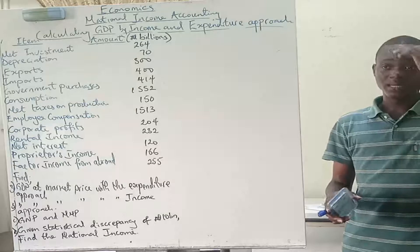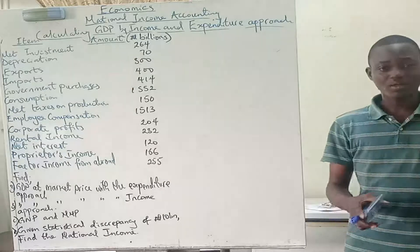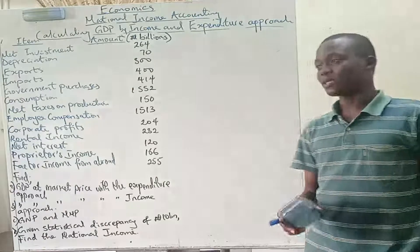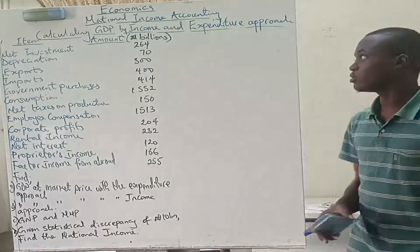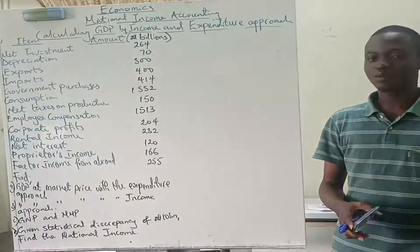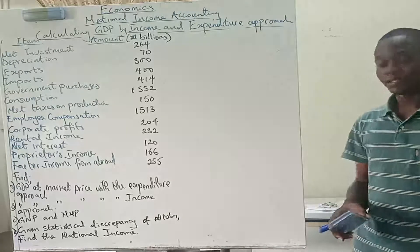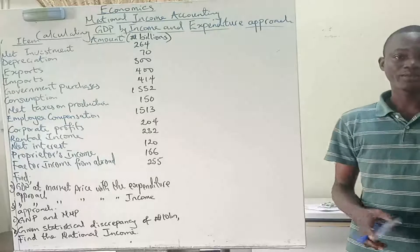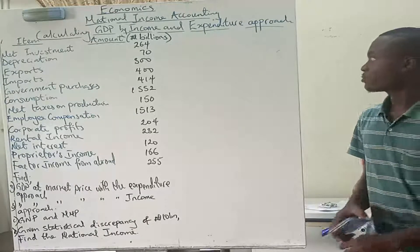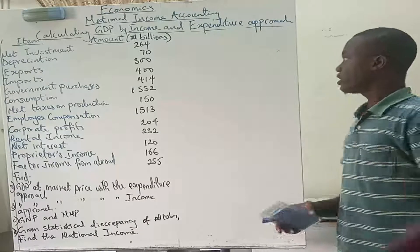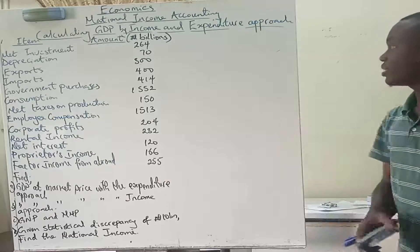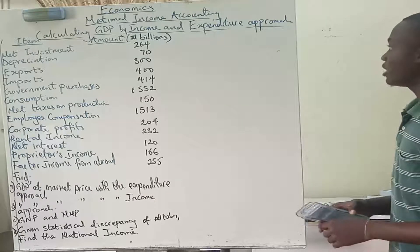The last video we did on national income accounting was in 2020, and this is now July 2021. Today's actual topic is calculating GDP by the income and expenditure approach.